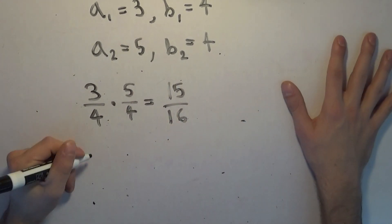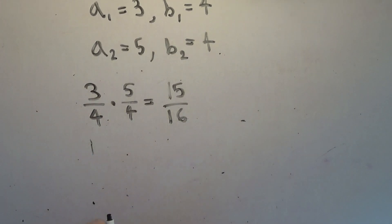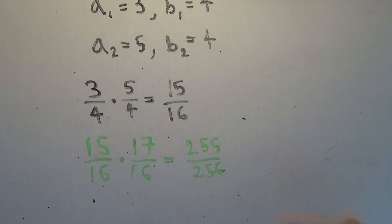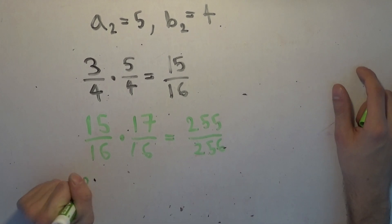Now what we're going to do is to continue the pattern we did here. We kept the same denominator, but the numerators are one less and one more than the denominator. So we're going to do the same thing here. So our next term is 15 over 16. A_3 is 15 and B_3 is 16. So now we have 15 over 16 and we're simply going to multiply it by 17 over 16, which is going to give us 255 over 256.